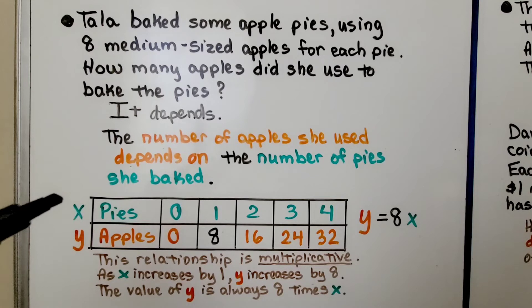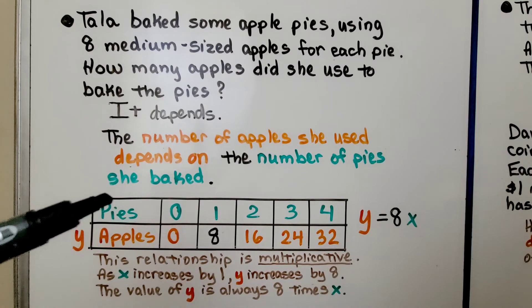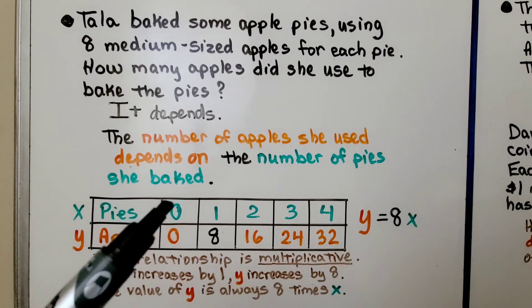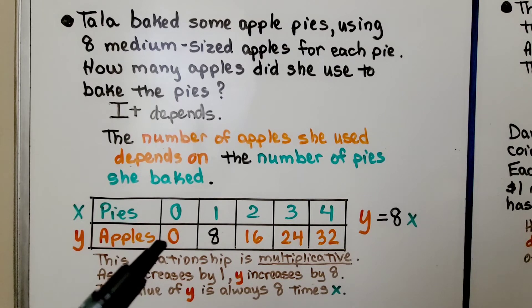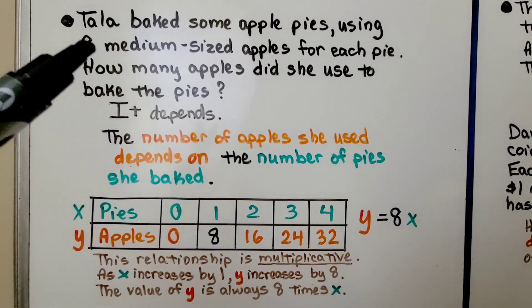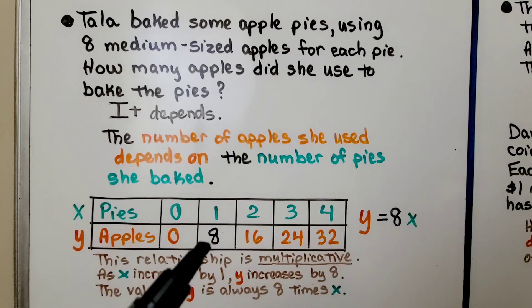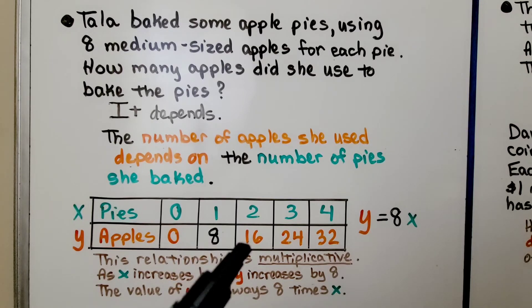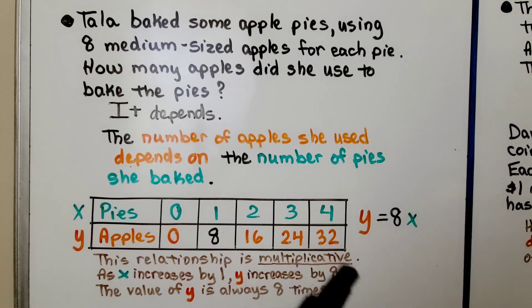We have our x and y values in the table. Here's the number of pies. Here's the number of apples used. If she makes 0 pies, she's going to use 0 apples. If she bakes 1 pie, it's 8 per pie, that would be 8 apples. If she makes 2 pies, that would be 16 apples, 3 pies, 24, and so on.